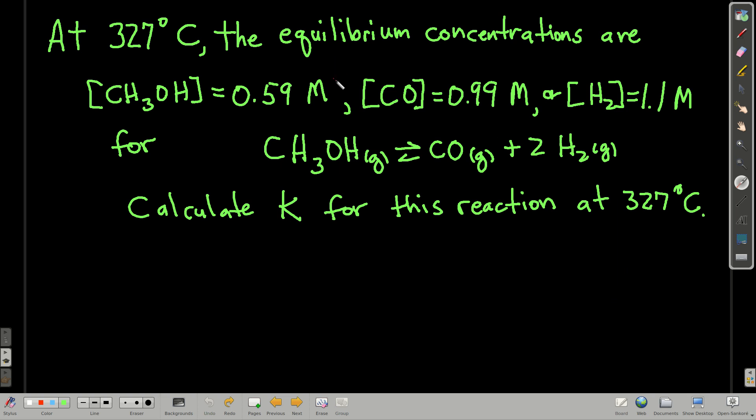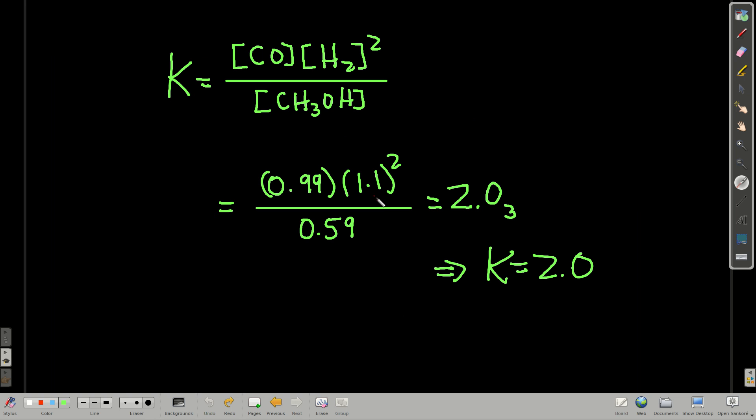Little example. The only reason that we say what the temperature is in these problems is that the equilibrium constant depends upon what the temperature is. At 327 degrees Celsius, the equilibrium concentrations are [CH3OH] = 0.59 M, [CO] = 0.99 M, and [H2] = 1.1 M for this reaction right here, methanol decomposing into carbon monoxide and hydrogen gas. And we want to calculate the value of the equilibrium constant for this reaction at this temperature. So we're going to write the equilibrium expression with the correct powers, plug in these values, and we'll have it. The products are carbon monoxide, its coefficient is one, hydrogen, its coefficient is two, and the reactant was methanol, coefficient of one. Plugging the numbers in, we get K is equal to 2.0.